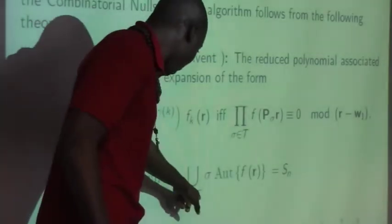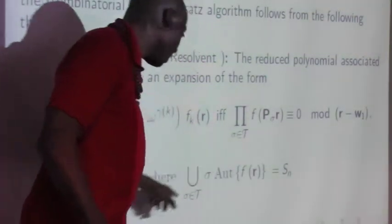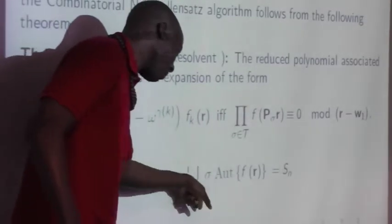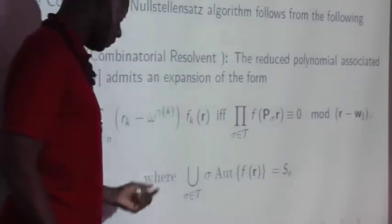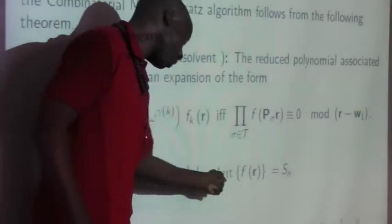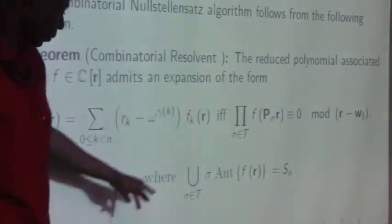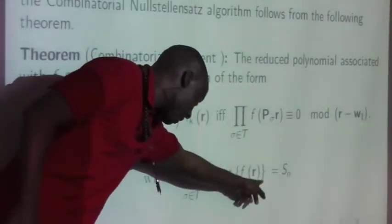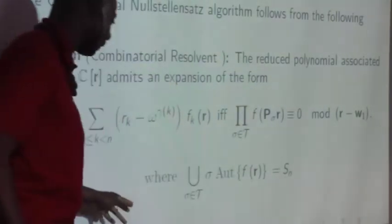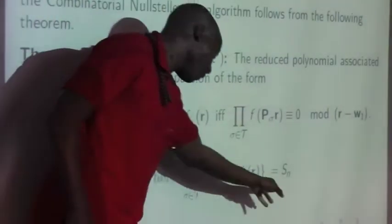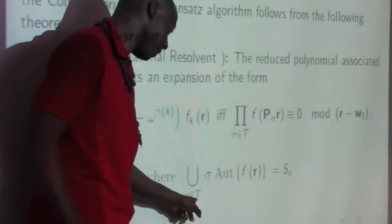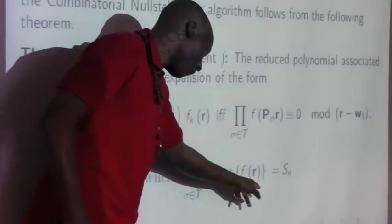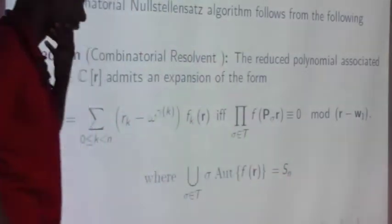The set over which we multiply consists of quotients of the automorphism group. You can partition the symmetry group as a quotient of the automorphism group. By Lagrange's theorem, the product of the size of T and of the automorphism group of F gives us the symmetric group.